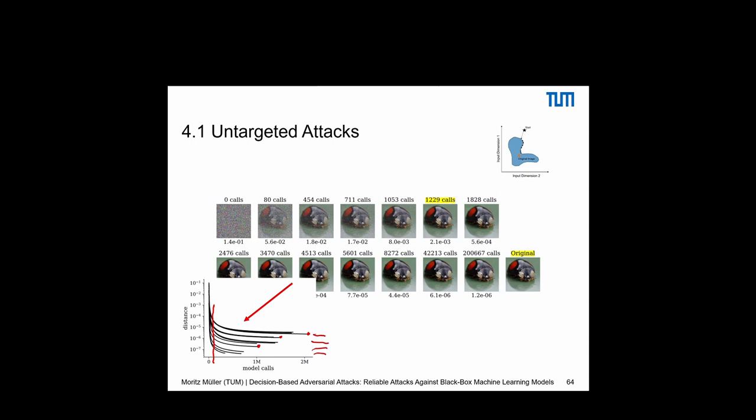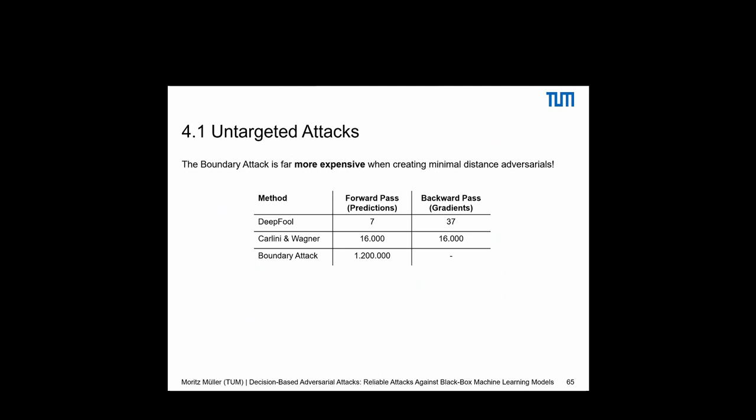Looking at the number of forward and backward passes for different methods, model predictions for boundary attacks are very expensive when we want to create a minimal-distance adversarial example — keep that in mind.